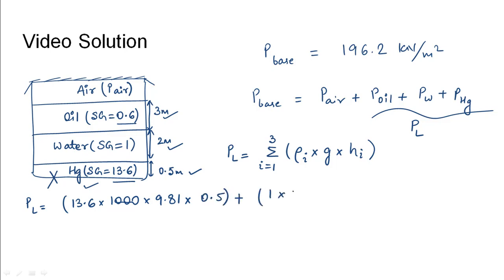for water: specific gravity 1 × 1000 × g (9.81) × h (2 meters), plus for oil: 0.6 × 1000 × 9.81 × 3. This value would turn out to be 103,986 N/m². On converting this to kilonewtons would be 103.986 kN/m².